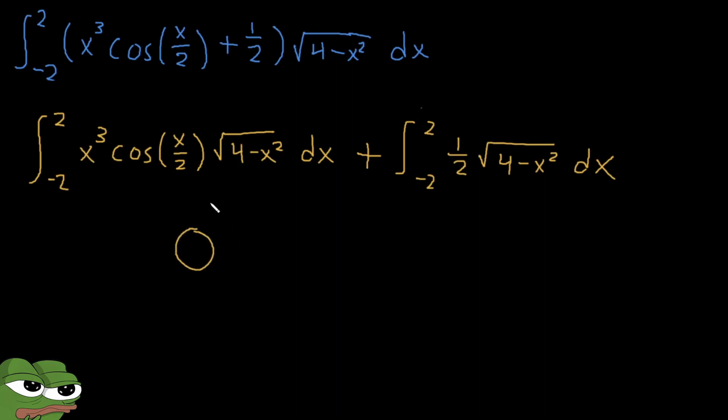Now we have to deal with this right hand side part. If you notice, this is the only tricky part of our right hand side integral. Root of 4 minus x squared. Now what does that look like to you?